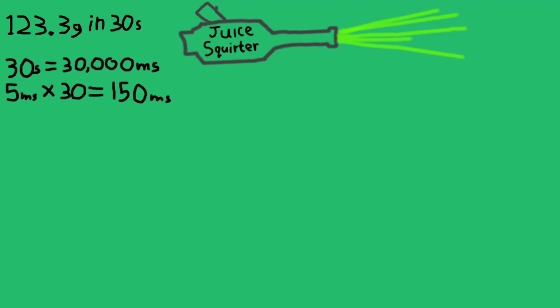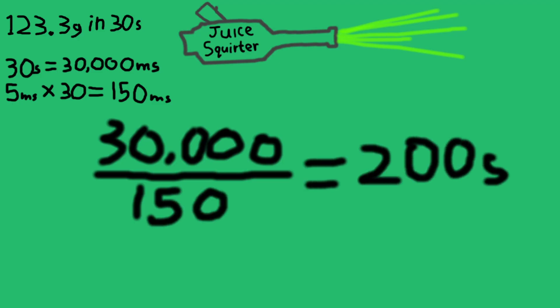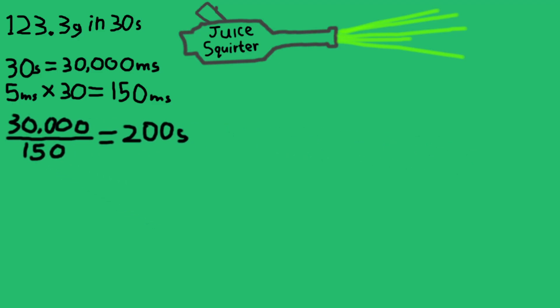Now, to find out how many seconds we need to have our pulsed function running in order to get to our target of 30,000 milliseconds, we simply divide 30,000 by 150, which gives us 200 seconds. So we'll run this test for 200 seconds.